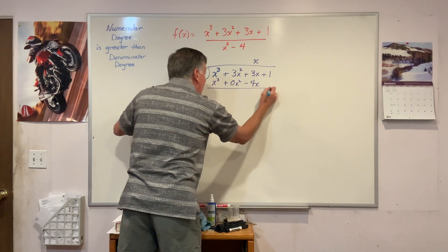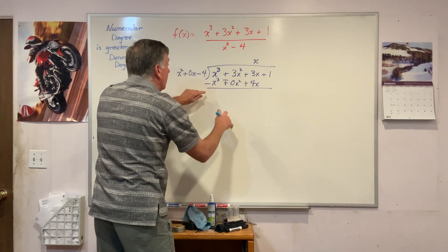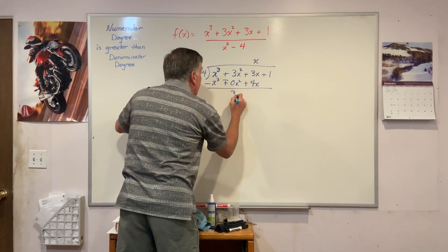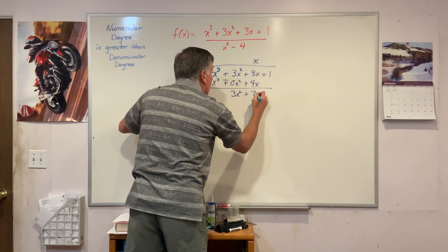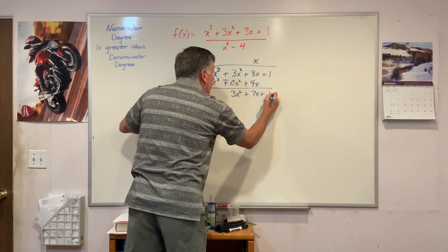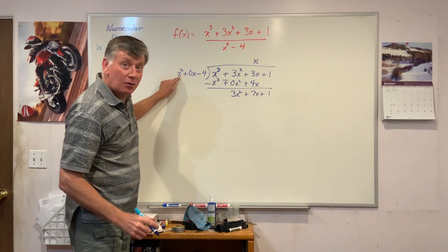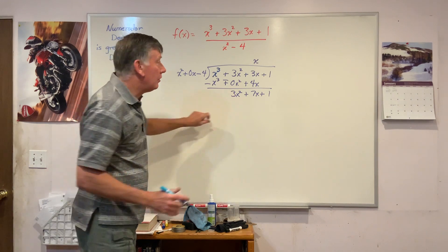Draw my line, change the signs, and add. I get 0 here, 3x squared here, plus 7x. Bring down my 1. And I ask myself, what do I need to multiply x squared by to get 3x squared? And the answer is plus 3.